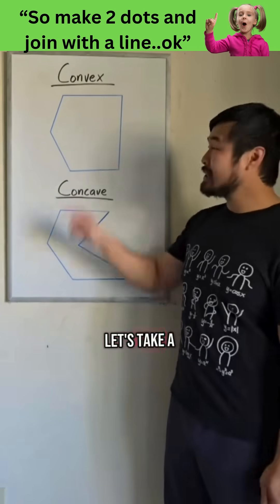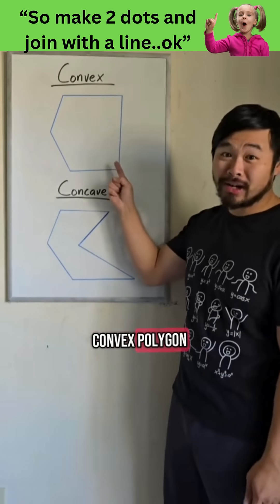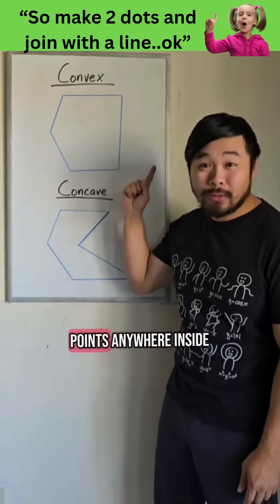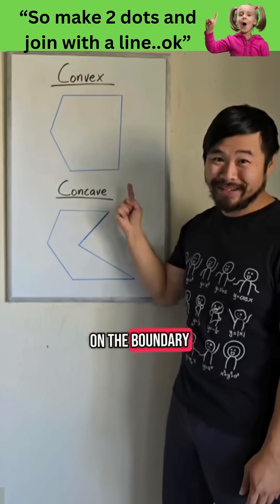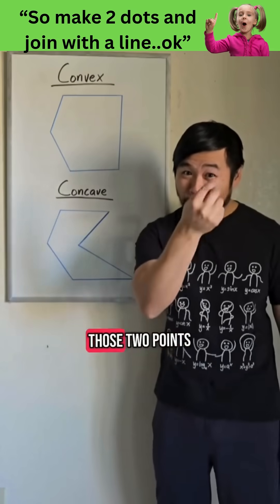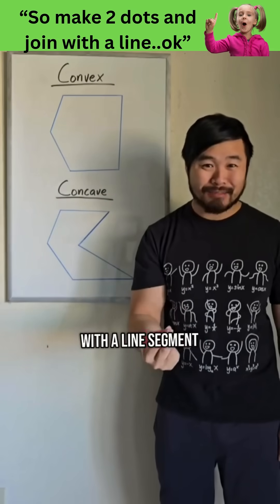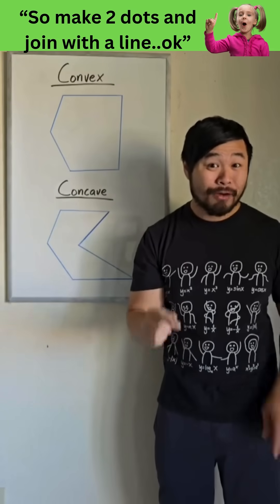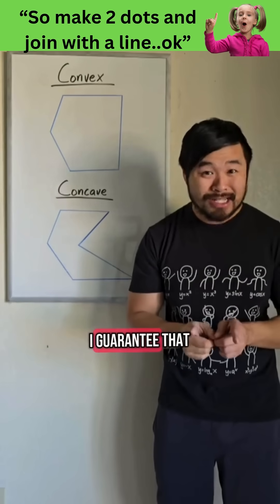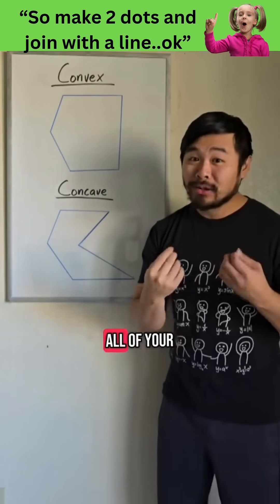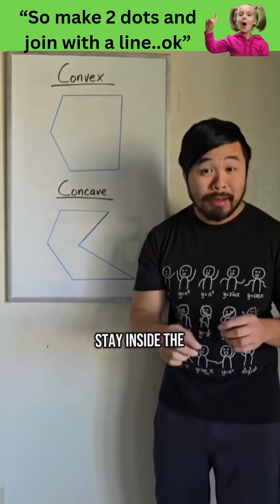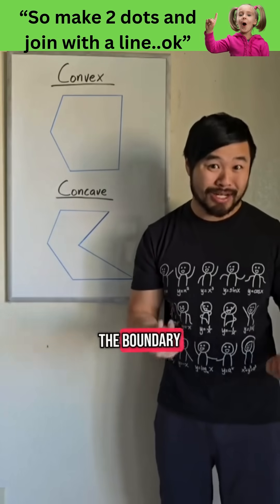Let's take a look at this convex polygon. I want you to pick two points anywhere inside the shape or on the boundary, then connect those two points with a line segment. For all of you doing this, I guarantee that all of your line segments stay inside the shape or on the boundary.